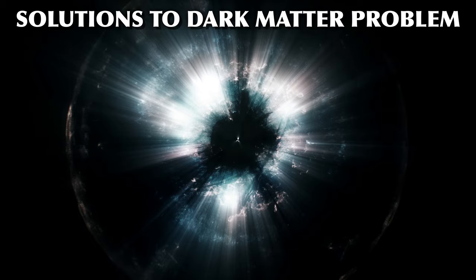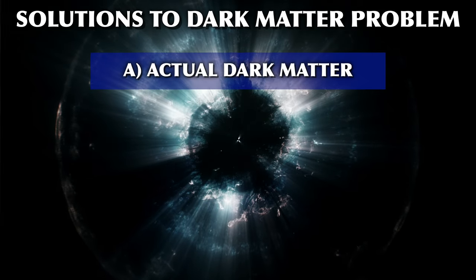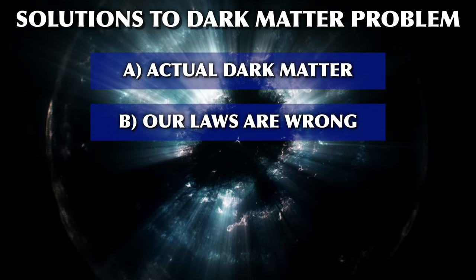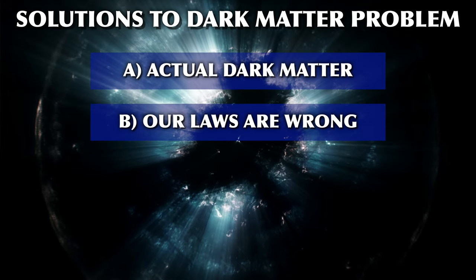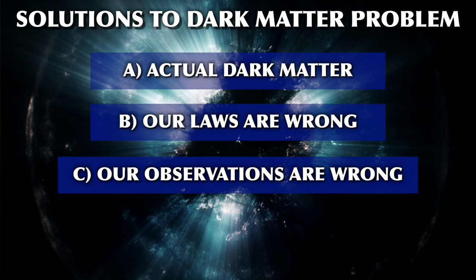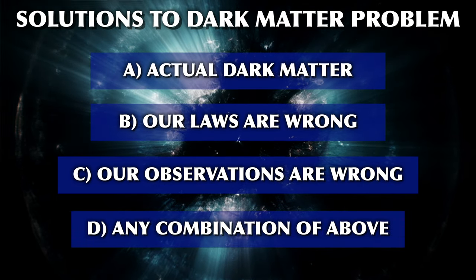The problem is real — galaxies don't do what we expect them to do. When people say dark matter is not a theory or dark matter is definitely a thing, they simply mean there is a real discrepancy out there. As for possible solutions, the list is: A — there is actually a lot of invisible mass in the universe, aka dark matter; B — our laws of gravity and/or motion are incorrect or incomplete at those scales; C — all of our observations are wrong and there is no problem; or D — any combination of the above. The main options under consideration are A and B, and currently A is favored because it can arguably explain more of the observations. However, none of the current proposals fit all of the evidence perfectly, so the debate is far from settled.